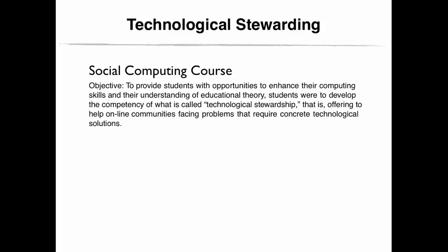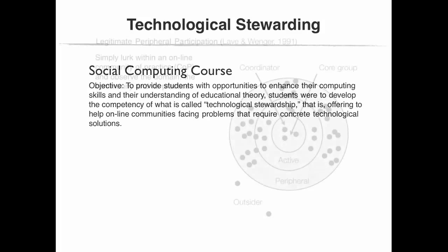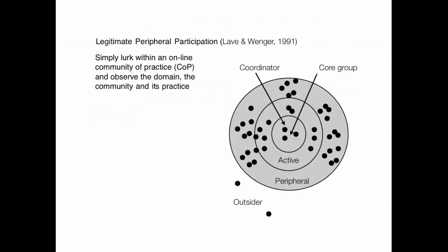To develop their technological stewardship, students had the choice of participating in an online community of practice or engaging in what is called legitimate peripheral participation, which means to simply lurk within an online community of practice and observe the domain, the community, and its practice. During the first week of the course, students were encouraged to join online communities with which they shared similar interests, not necessarily in education. Students were required to keep detailed notes with respect to what was happening in those online communities for at least six weeks.